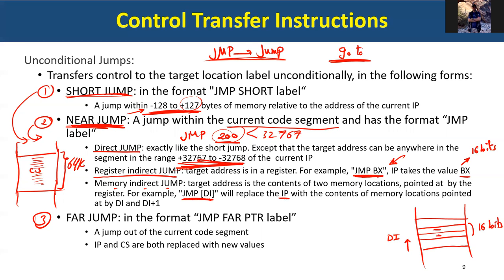The third type of unconditional jump is the far jump. The format is 'JMP FAR PTR label,' where FAR PTR is a directive keyword and the label is the target. Here you are jumping outside the current code segment — to some segment higher or lower — and in that case both IP and CS are replaced with the new values of the destination segment.